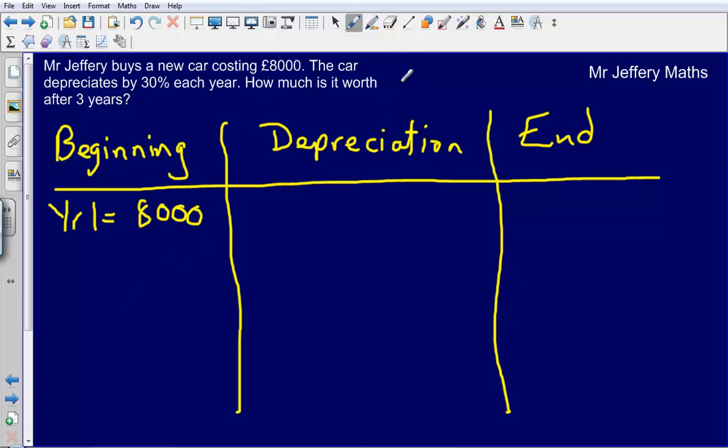Now it's depreciating by 30% each year. So let's work out what my 30% is of £8,000. Well, 10% will be £800, so 30% will be £2,400. So it is depreciating by £2,400. So that means that at the end of the year, it's going to be worth £5,600.